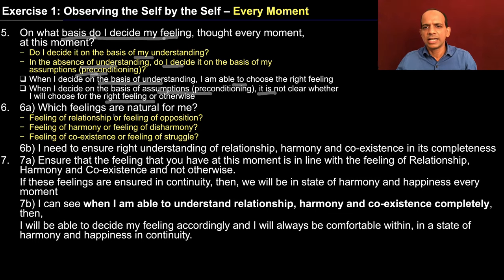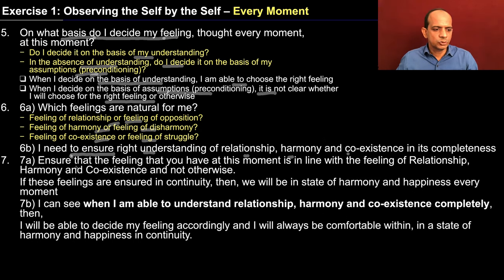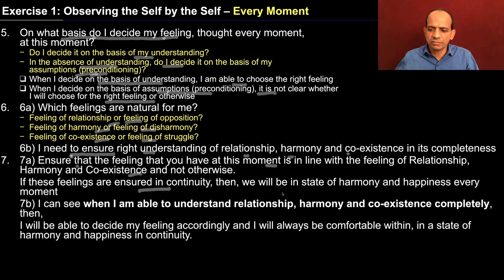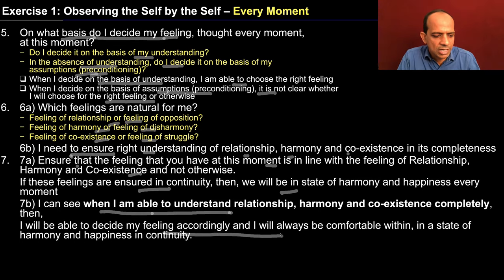Then in step six, you are trying to find out which feelings are natural for you — feeling of relationship or opposition, harmony or disharmony, coexistence or struggle. And then in step six, you decide that I need to ensure right understanding of relationship, harmony and coexistence, its completeness. In step seven, you are ensuring that the feeling that you have at this moment is in line with the feeling of relationship, harmony and coexistence. So you decided to understand the feeling of relationship, harmony and coexistence. And then now you are able to ensure that every thought, every feeling that you have is in line with this. If these feelings are ensured in continuity, then we will be in a state of harmony and happiness every moment. And thus I can see that when I am able to understand relationship, harmony and coexistence completely, I will be able to decide my feeling accordingly, and I will always be comfortable within, in a state of harmony and happiness in continuity.